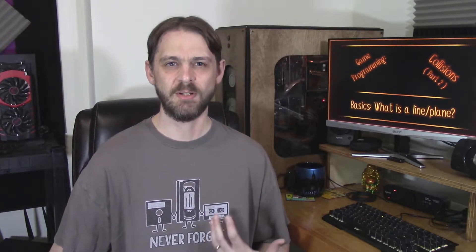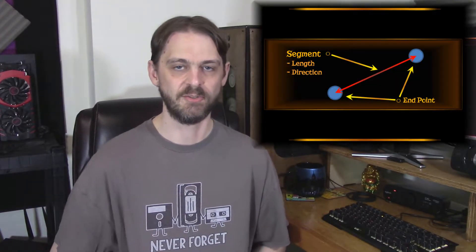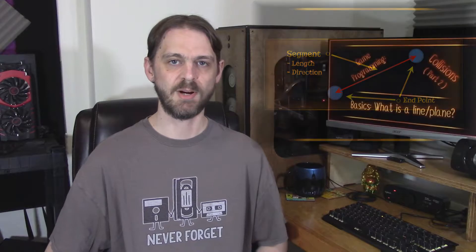Everybody knows a line is just a straight bar, but in games you have to actually do more than that. You have a start point and an end point and a segment in between — that's what this image here is. So you have a set length that you know between those two points. Effectively it's a vector with an end point and a start point. Very simple.